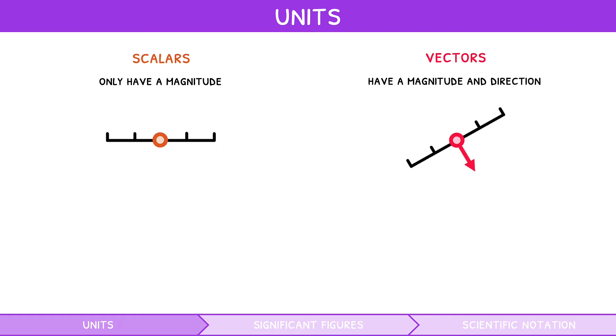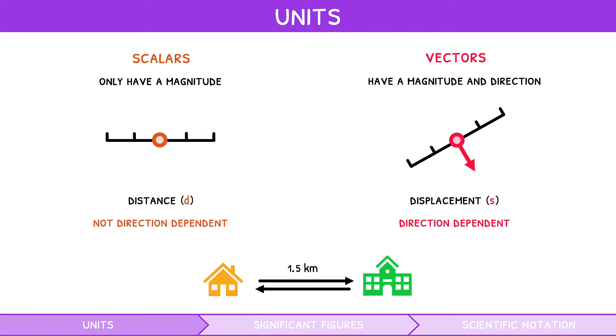A classic example the IB expects you to remember is distance versus displacement. Distance is a scalar and thus not direction dependent, whereas displacement is a vector and is direction dependent. For example, if you travel 1.5 km from home to school and back, the distance traveled is 3 km. But the displacement is 0, since you start and end at the same position.